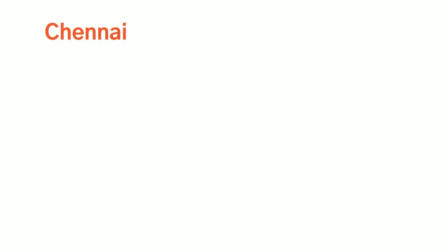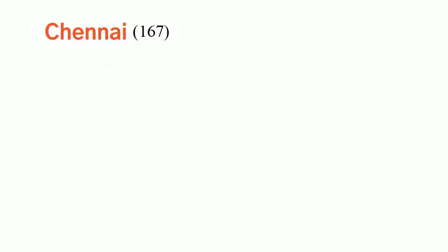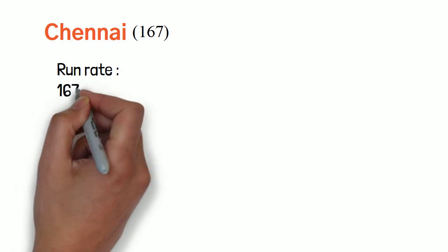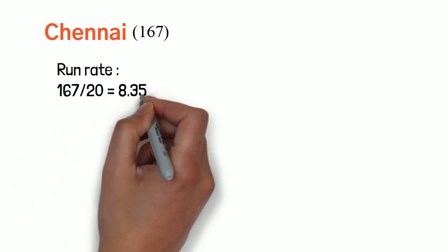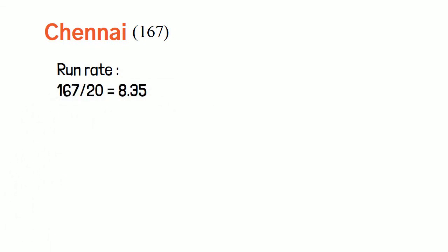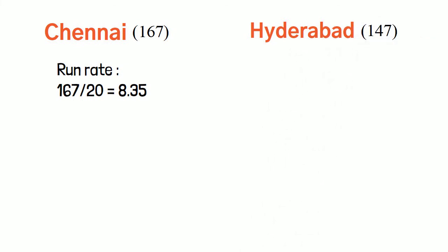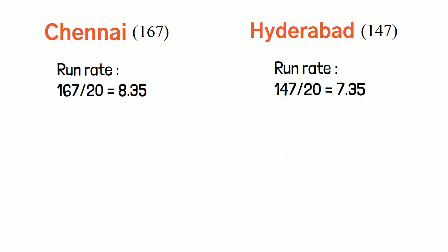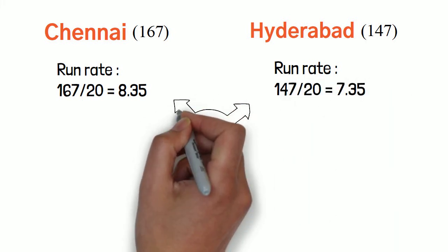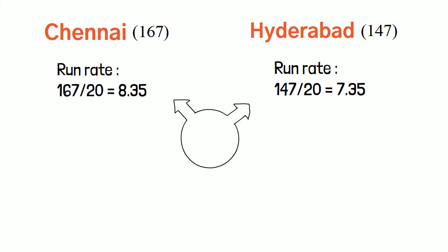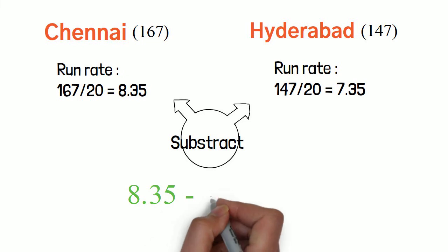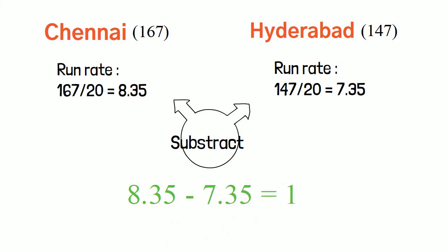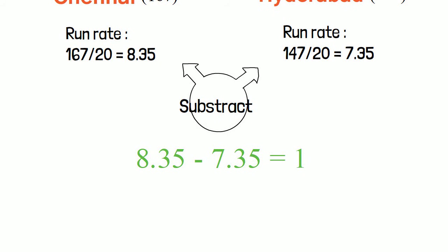Chennai batting first scored 167 runs in 20 overs, so their batting run rate is 167 divided by 20, which is 8.35. While chasing, Hyderabad went 20 runs short and scored 147 runs in 20 overs, which is around 7.35 run rate. So we have both teams' run rates. We subtract them to get the net run rate: 8.35 minus 7.35 equals 1. That is the net run rate for this match.